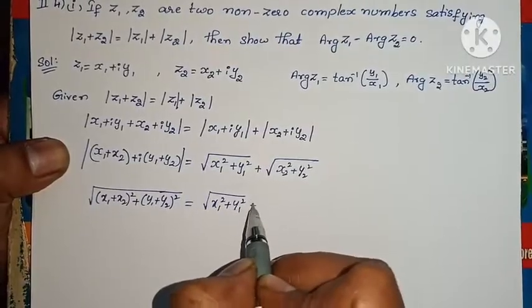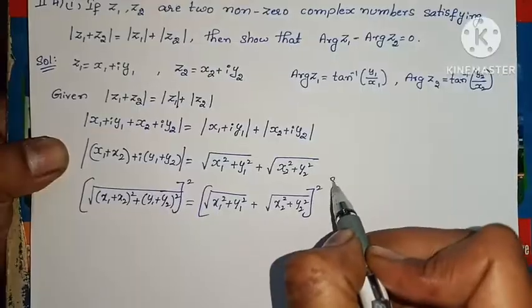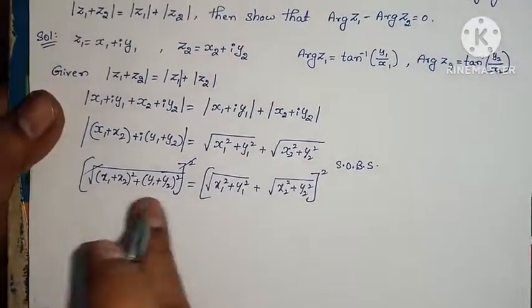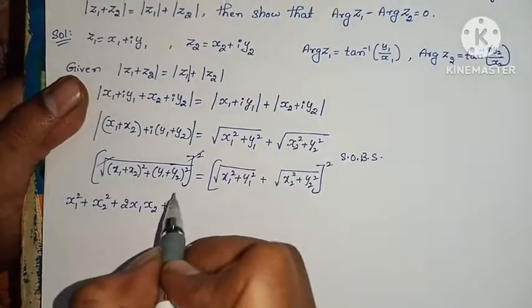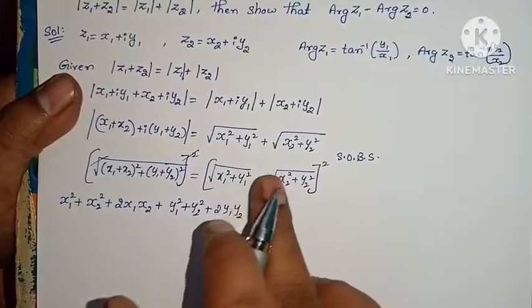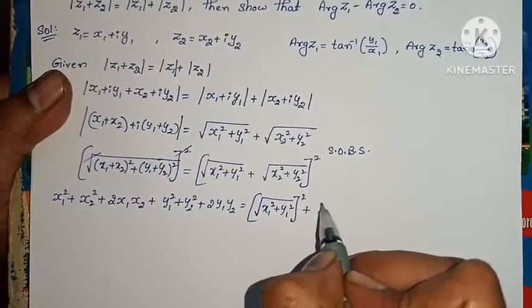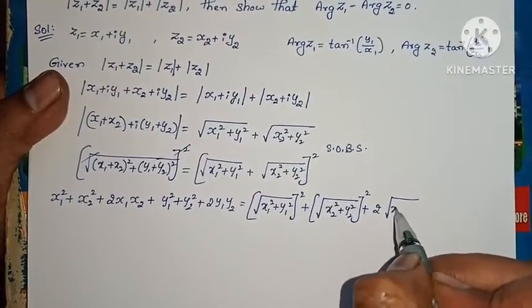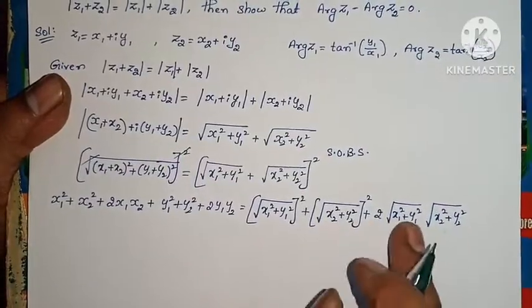This equals root of (X1+X2)² plus (Y1+Y2)² equals root of X1² plus Y1² plus root of X2² plus Y2². To remove the roots, squaring on both sides: the root squared cancels. We apply the (a+b)² formula on both sides. Left side: X1²+X2²+2X1X2 plus Y1²+Y2²+2Y1Y2.